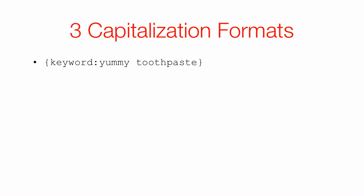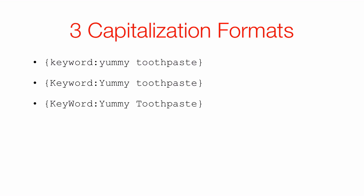There are three different capitalization formats useful to know. The first: both K and W are lowercase, so the keyword appears in all lowercase. Second: the K in 'keyword' is capitalized, so only the first word of a multi-word phrase gets capitalized — for example 'Yummy' but not 'toothpaste.' Third: both K and W are capitalized, which means every single word in the triggered keyword phrase gets capitalized.